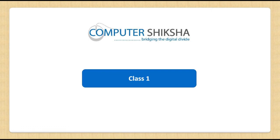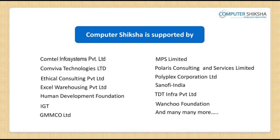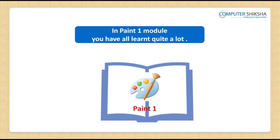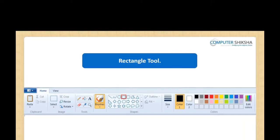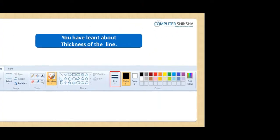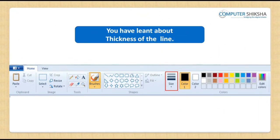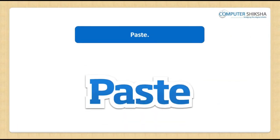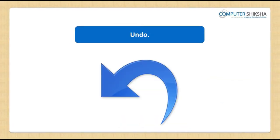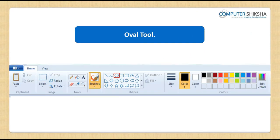A very good day to all of you. In the Paint One module, you have all learnt quite a lot already, like Line Tool, Text Tool, Rectangle Tool, Color 1, Color 2, Fill with Color, Thickness of the Line, Color Palette, Copy, Paste, Undo, Redo, Oval Tool, etc.